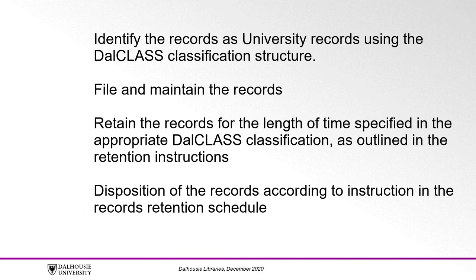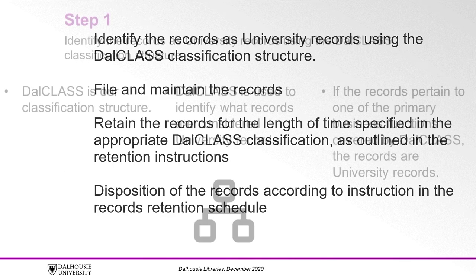Following these four steps will ensure that all university records are effectively identified, classified, and filed, retained for the appropriate length of time, and dispositioned correctly. Now, let's look at each of these steps in more detail.